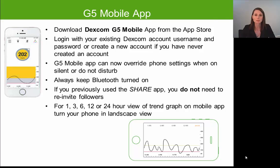The Dexcom G5 app now has the ability to override your phone settings — meaning that if your phone volume is turned all the way down, or if you have the mute switch or do not disturb option enabled, you will still receive an alert on your smart device. If the phone volume is down or mute is enabled, the first alert would be a vibration only. If you missed that alert and did not clear it, it would then result in an audible alert with increasing volume every five minutes until you clear or silence that alarm.